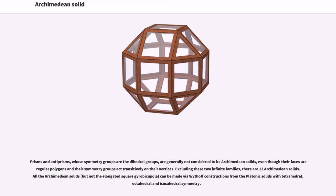All the Archimedean solids, but not the elongated square gyrobicupola, can be made via Wythoff constructions from the Platonic solids with tetrahedral, octahedral, and icosahedral symmetry.